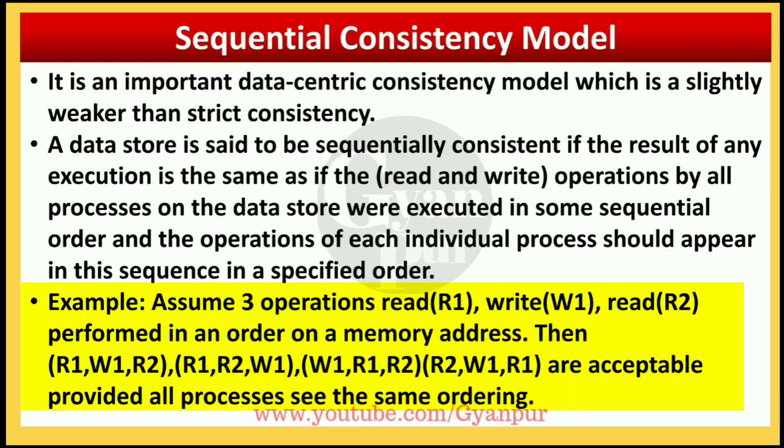For example, assume there are three operations: read, write, then read. The orderings R1, W1, R2 — or read 1, write 1, read 2; then read 1, read 2, write 1; or write 1, read 2, write 2 — are all acceptable, provided all processes see the same ordering.